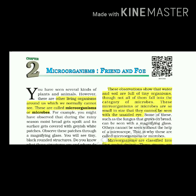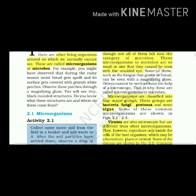These microorganisms or microbes are so small in size that they cannot be seen with the unaided eye. Some of these, such as the fungus that grows on bread, can be seen with a magnifying glass. Others cannot be seen without the help of a microscope. That is why these are called microorganisms or microbes.